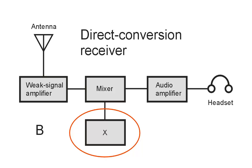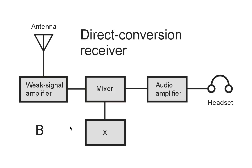they will sound like they are on top of each other, even though they aren't. This is the principal disadvantage of a direct conversion receiver as compared to a superheterodyne with a product detector and filters. This particular circuit involves the use of a local oscillator, and once again, that is choice B.